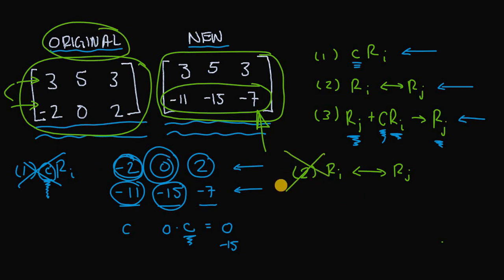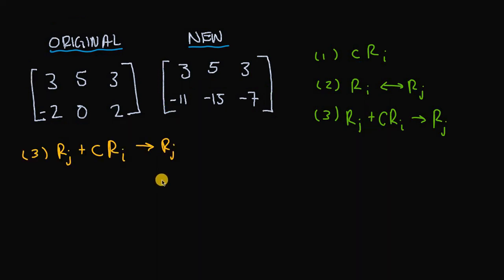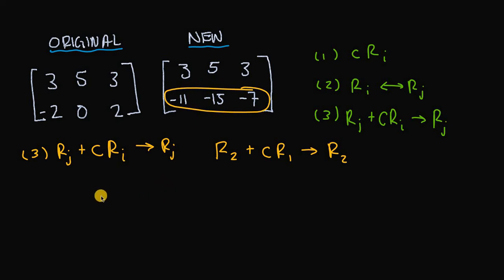Rule two doesn't apply either. How about rule three? Rule three says we can take some row j and add to it some other row multiplied by a nonzero constant to get a new row j. Rule three suggests we could add a multiple of row one to row two to produce a new row two. We need to multiply every element of row one by some nonzero constant c and add it to the original row two to get the new row two.